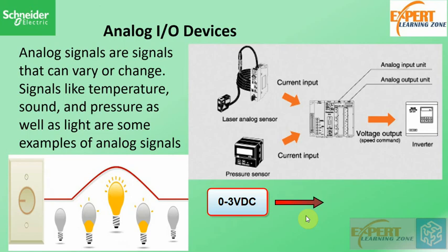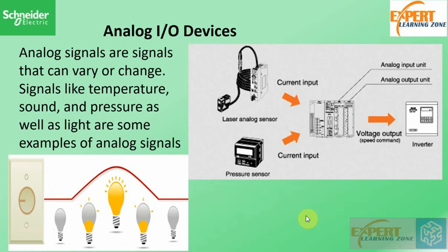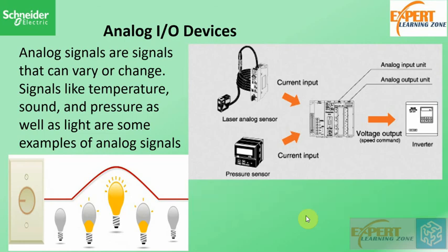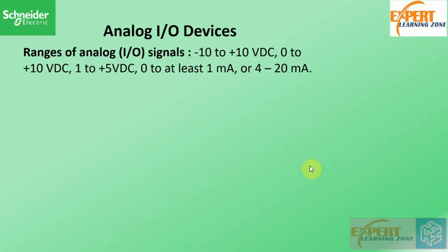Analog outputs can be used to control a generator from 0 to 2000 kilowatts, or a 4 to 20 milliamp analog output can be used to calibrate a temperature gauge from minus 20 degrees Fahrenheit to 200 degrees Fahrenheit. As you can see, there are many opportunities for applications of analog inputs and outputs in the industrial ecosystem.